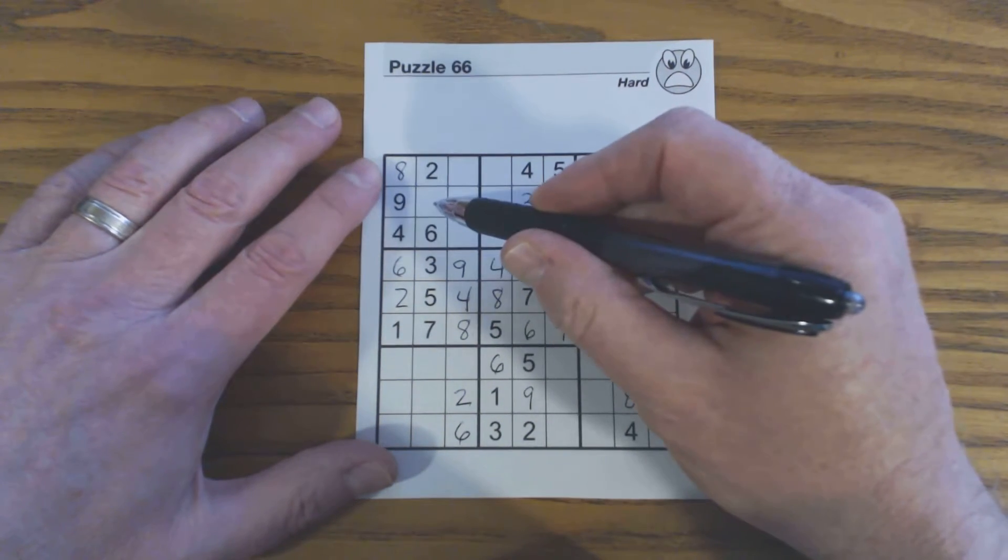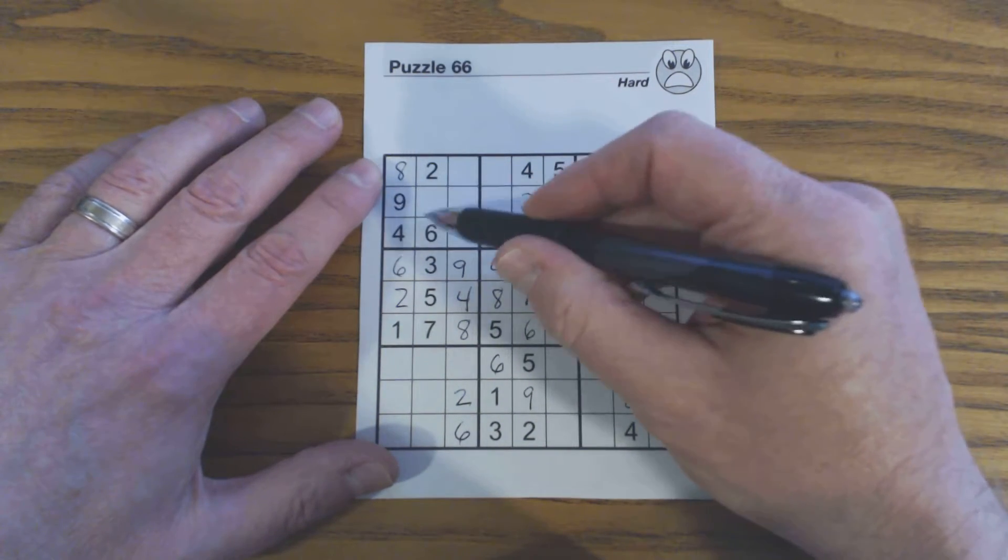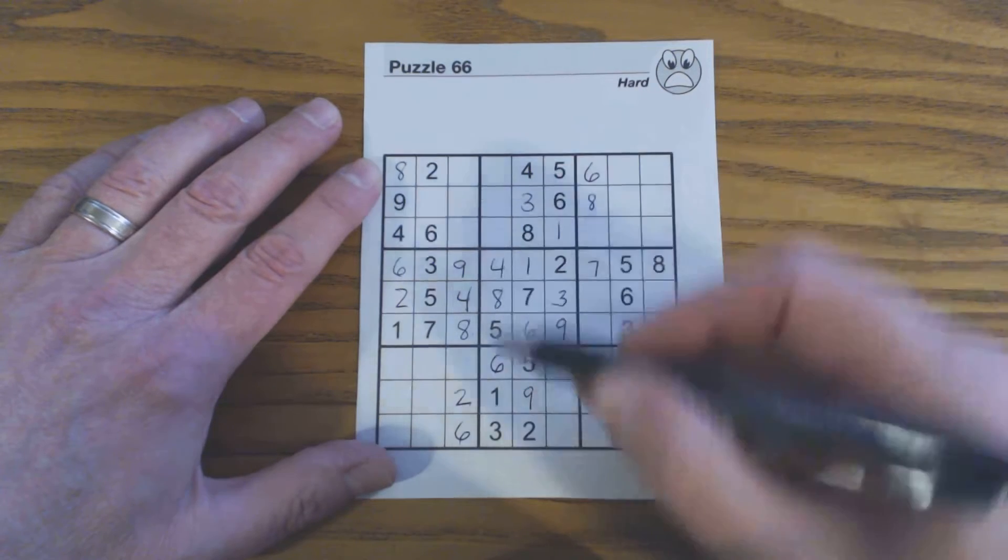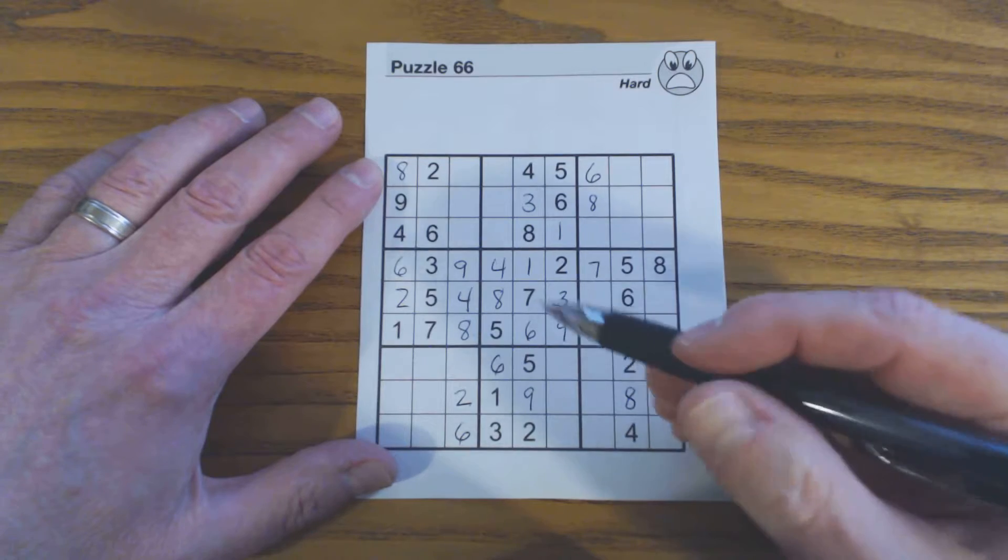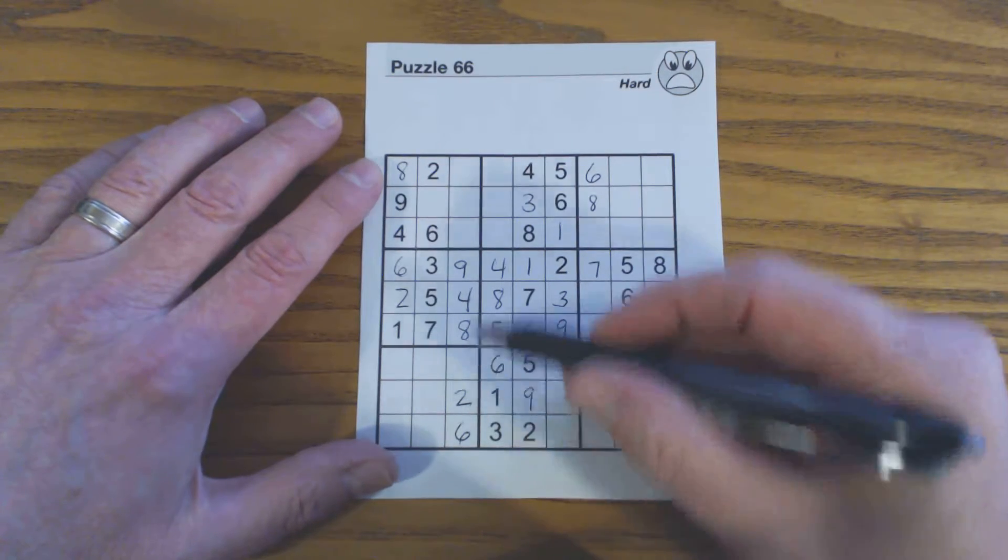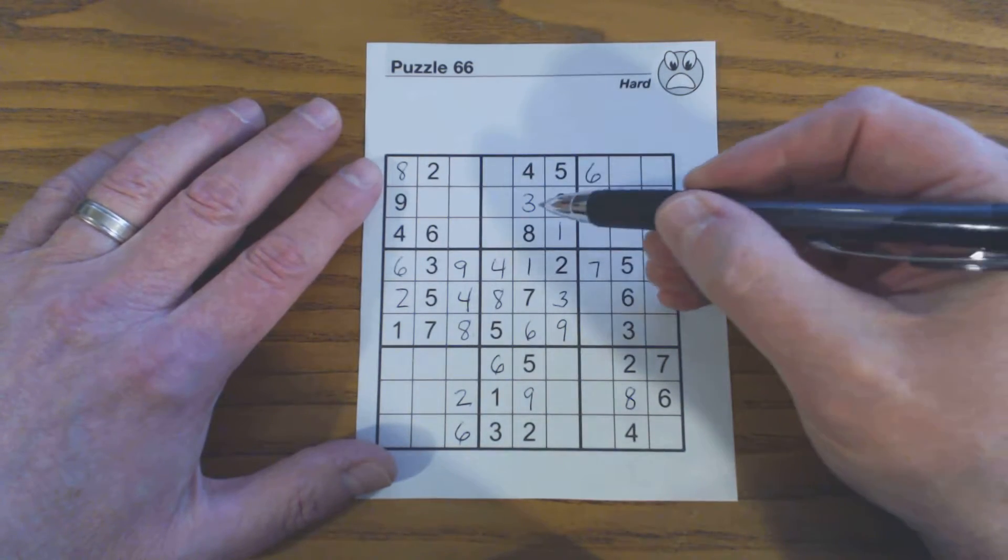So therefore this number can only be a 1, 3, 5, or 7, and this number can only be a 1, 3, 5, or 7. And because they're identical twins, we might be able to find out what number fits in those two locations.